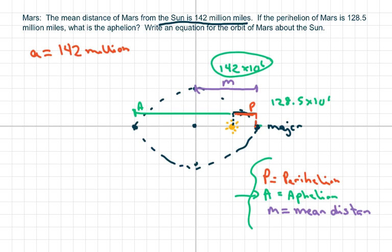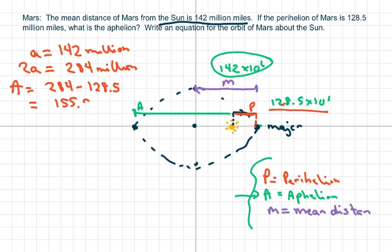So now the length of the major axis is just two times that. So 2A is going to be 284 million. Then we want to find our aphelion. So the aphelion is just going to be 284 million minus 128.5 million. And that's going to give you 155.5 million miles.